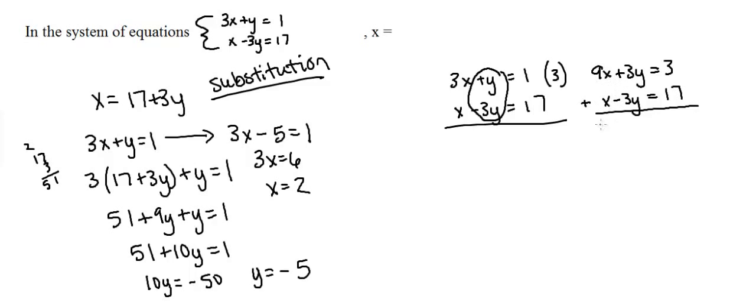So right here we have 9x plus x, which gives us 10x. And then we have 3y minus 3y, which is just 0. That was exactly our goal. That's what we wanted to do because these are just going to cancel out. So we eliminated the y variable.